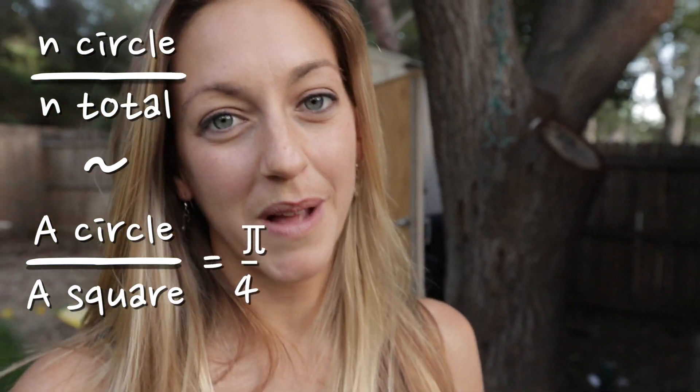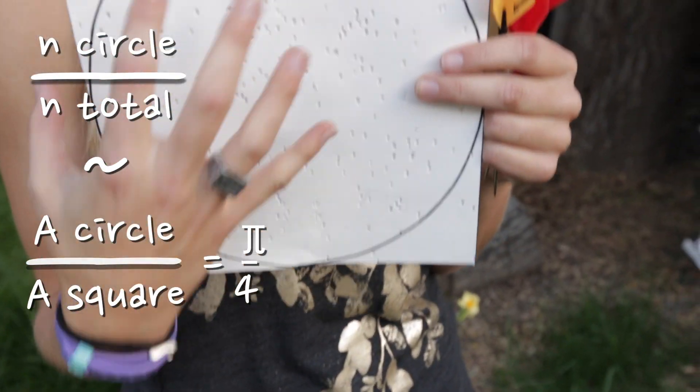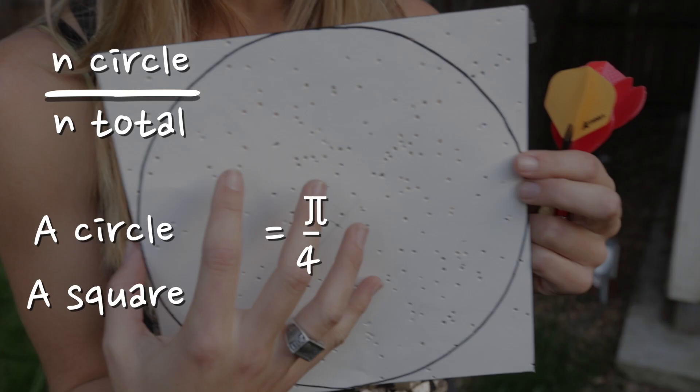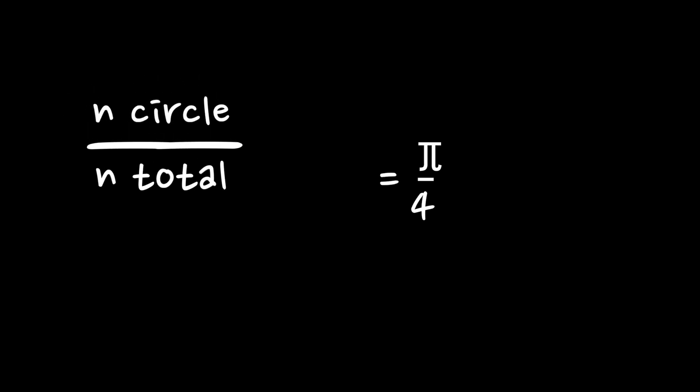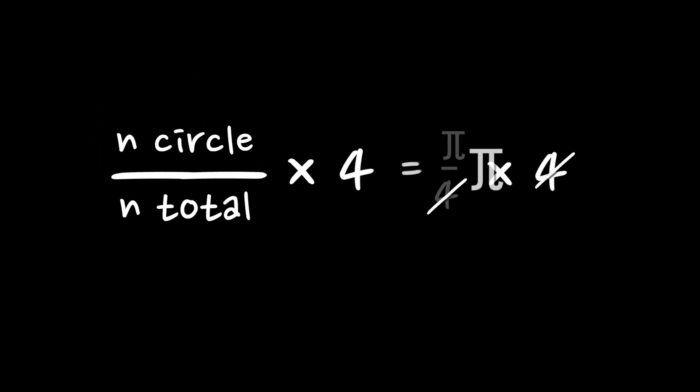Therefore, if we multiply the ratio of the number of darts that land inside the circle divided by the number of darts total by four, we should get pi. So how'd we do? We didn't do great.